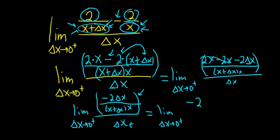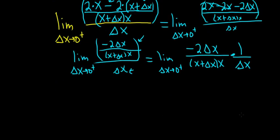So it's this fraction, negative 2 delta x over x plus delta x times x, times the reciprocal, so 1 over delta x. Because when you divide by delta x, you're really multiplying by the reciprocal of delta x. So finally, these cancel.